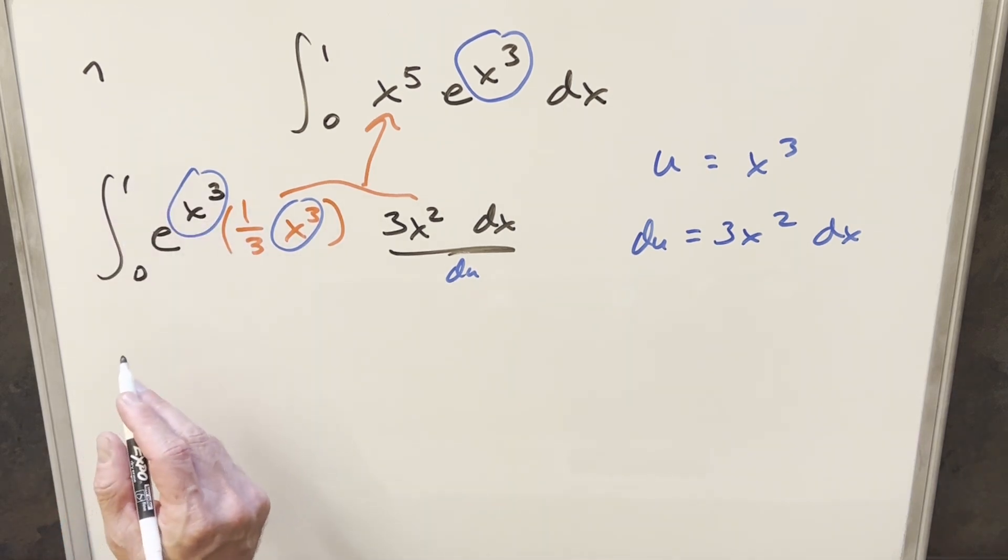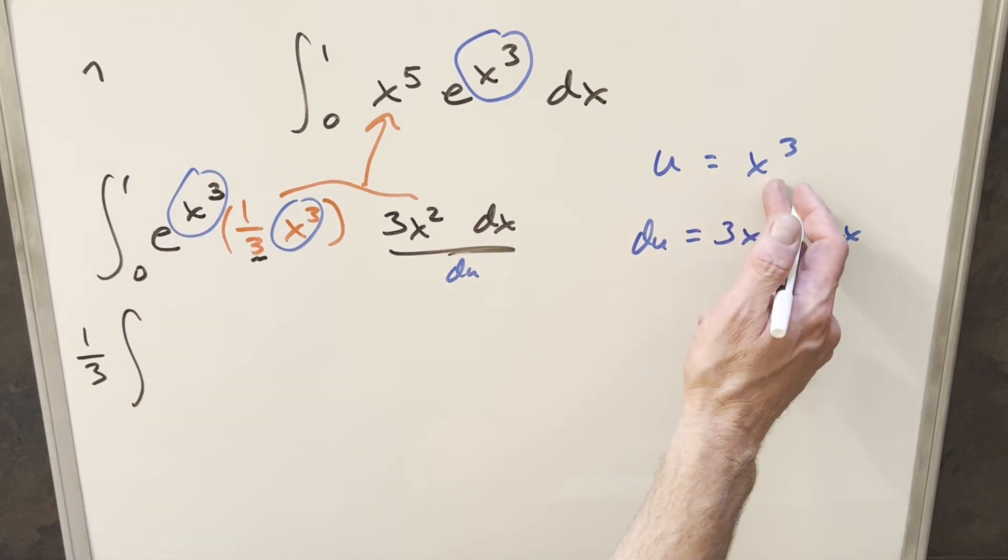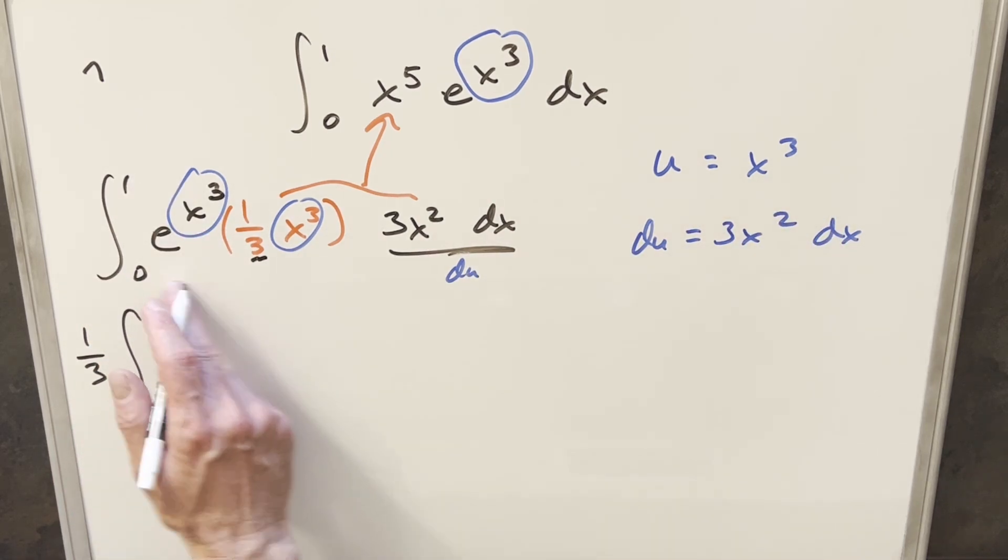Sorry, I forgot the bounds here. But anyway, we'll go ahead. First, I'll bring this one-third out front. And then next we'll update our bounds, plugging in 1, 1 cubed, still 1. Same thing with 0. You plug 0 in, it's still 0.